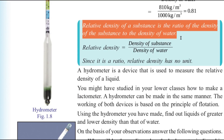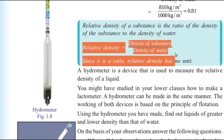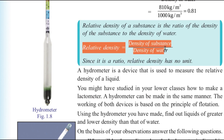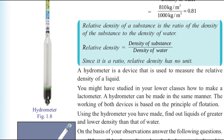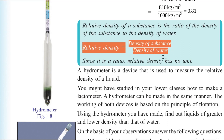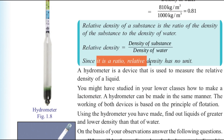We can define relative density as: the relative density of a substance is the ratio of the density of the substance to the density of water. That is, relative density equals density of substance divided by density of water (1000 kg/m³). Since both quantities have the same units, kilogram per meter cube divided by kilogram per meter cube cancels out, so relative density has no unit.